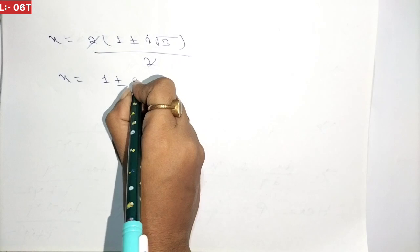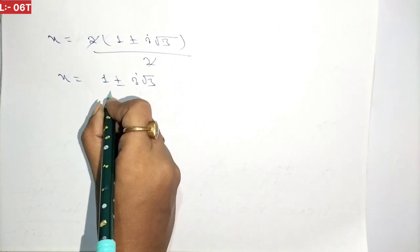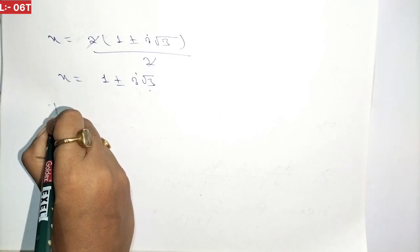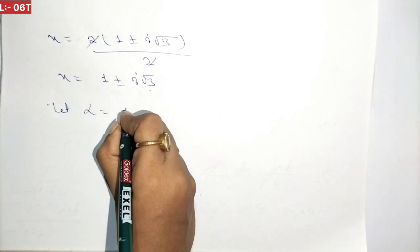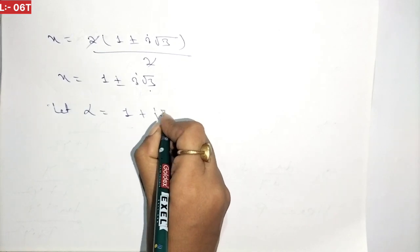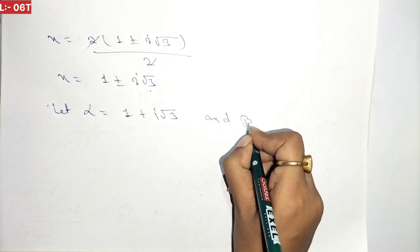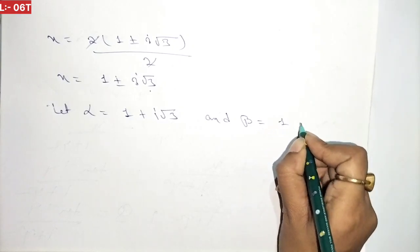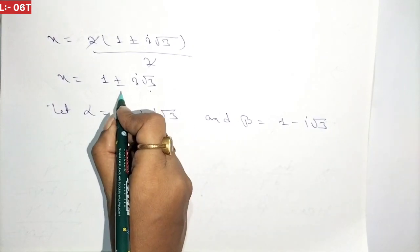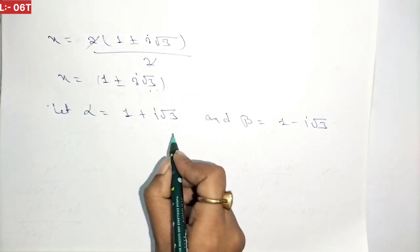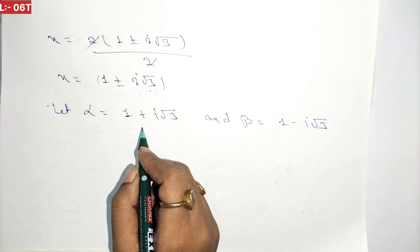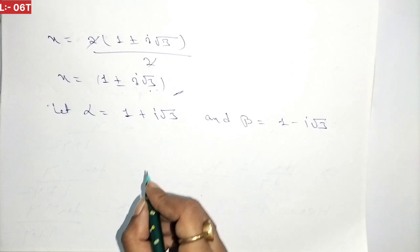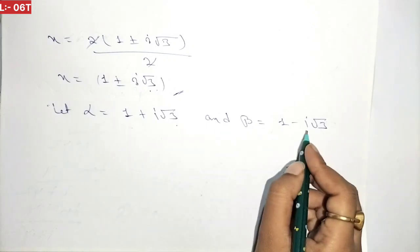So x equals 1 plus or minus i root 3, which has an imaginary part. So let alpha equal to 1 plus i root 3 and beta equal to 1 minus i root 3, because here we have plus or minus giving two factors — these are alpha and beta, the roots of the quadratic equation.